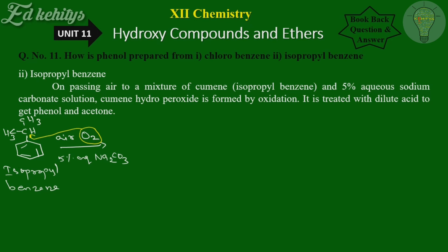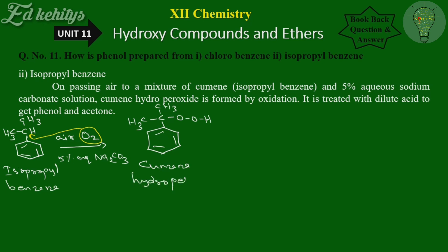A carbon with hydrogen atoms is added. This is the benzene ring. Both methyl groups are present. Carbon-hydrogen with oxygen forms the hydroperoxide group. This is the cumene hydroperoxide structure. Next, dilute acid — sulfuric acid (H2SO4) — is used to treat it. The oxygen-oxygen bond cleaves.